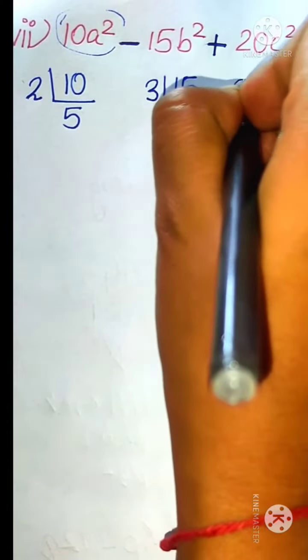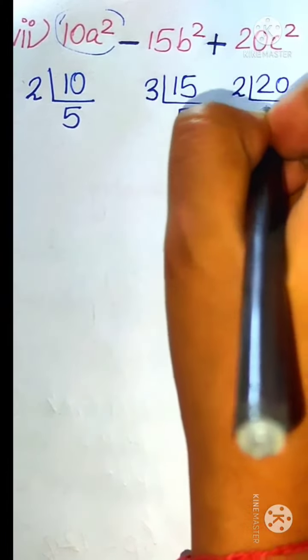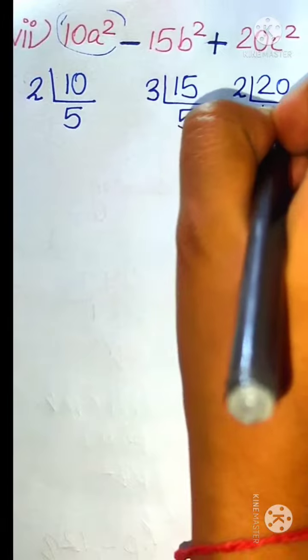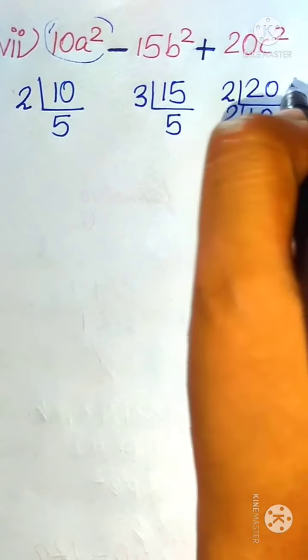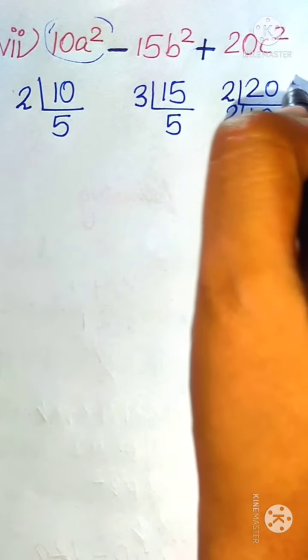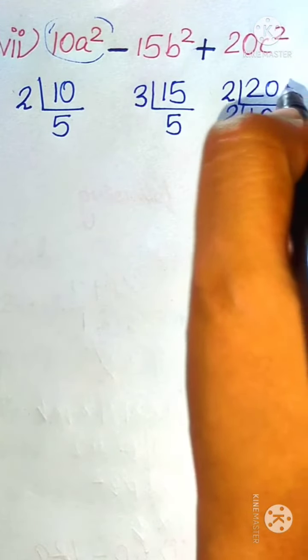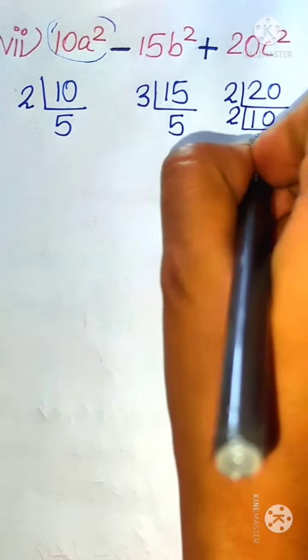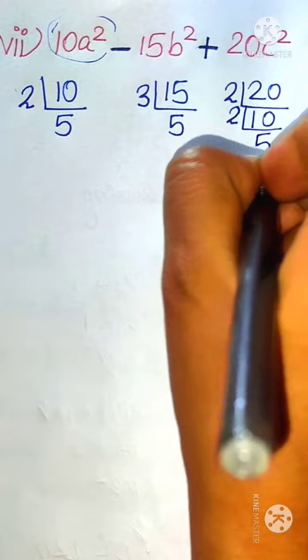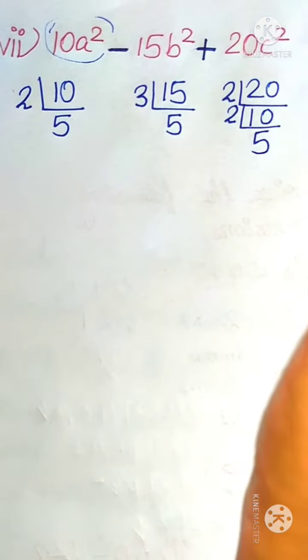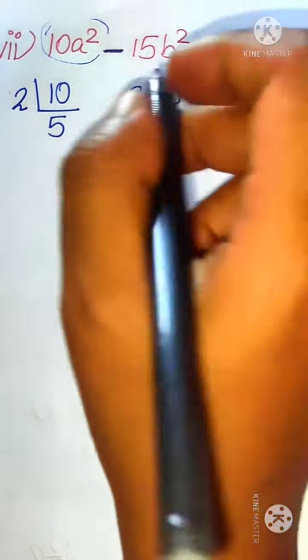Next we have 20. Since 20 is divisible by 2, we get 2 tens are 20. Then 10 is divisible by 2, giving 2 fives are 10. Since 5 is prime, we stop here. So 20 = 2 × 2 × 5.